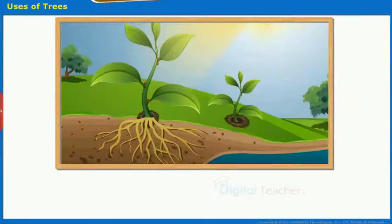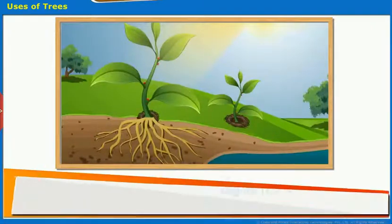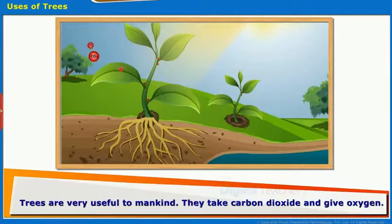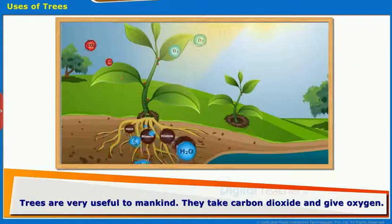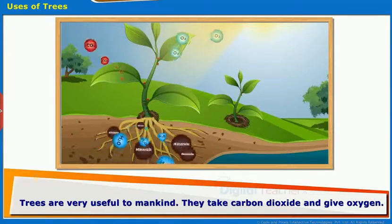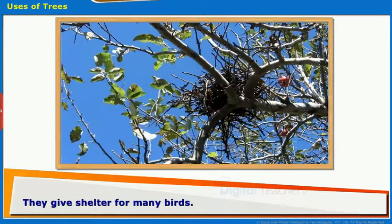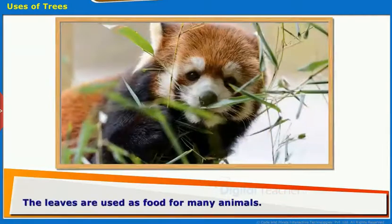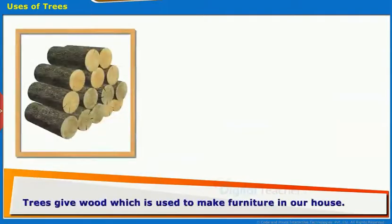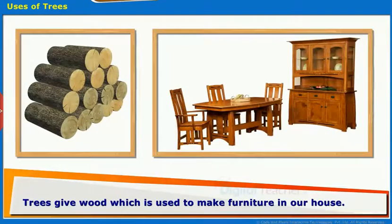Uses of trees: Trees are very useful to mankind. They take in carbon dioxide and give out oxygen. They give shelter to many birds. The leaves are used as food for many animals. Trees also give wood which is used to make furniture in our homes.